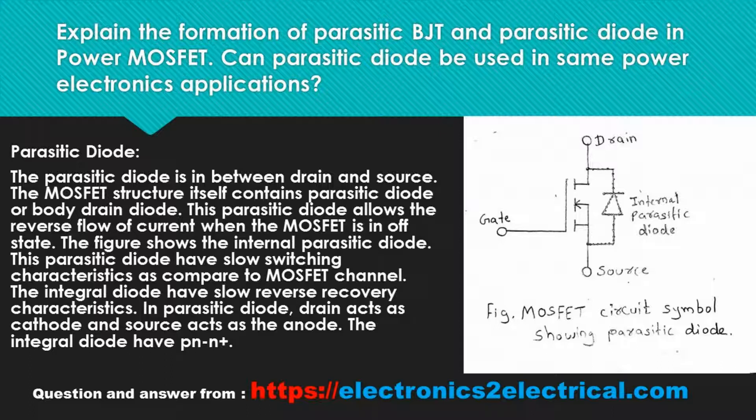This parasitic diode has slow switching characteristics compared to the MOSFET channel. The integral diode has slow reverse recovery characteristics. In the parasitic diode, the drain acts as the cathode and the source acts as the anode.